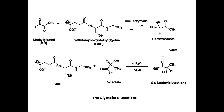MG can also be an important metabolite in the cellular biochemistry of microorganisms. The glyoxalase enzyme system catalyzes the conversion of toxic, metabolically produced alpha-ketoaldehydes, such as methylglyoxal, into their corresponding non-toxic 2-hydroxycarboxylic acids, such as D-lactate in the case of MG.